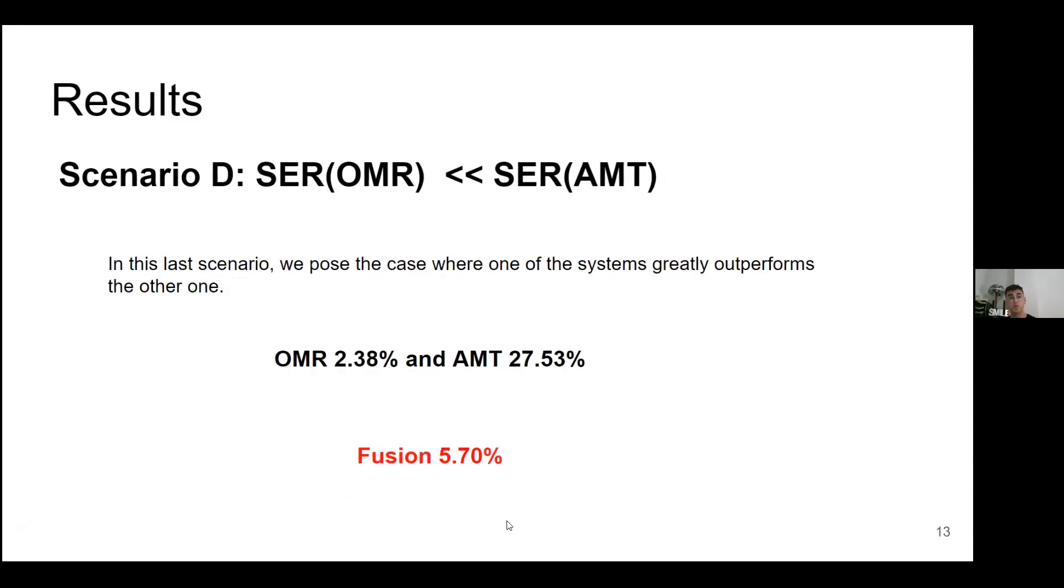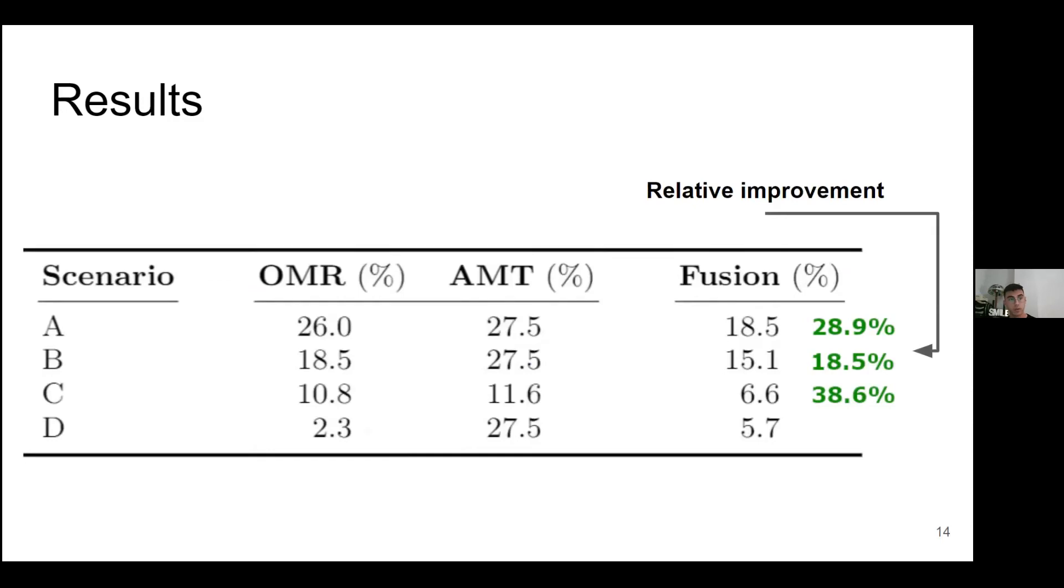The last one, scenario D, we train both models with the same data. We can see that OMR gets a result of 2.38% of error, so we don't have a margin to improve. In this case, the fusion is not necessary and at the same time is not useful. So here we have a table with all the scenarios and the results of both, the results of fusion, and at the same time with the relative error improvement.